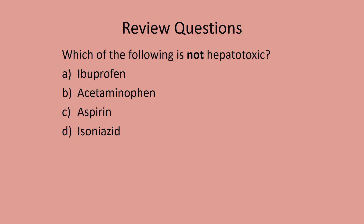Review question: which of the following is not hepatotoxic? Options are ibuprofen (IBU), acetaminophen (APAP), aspirin (ASA), and isoniazid (INH). The answer is ibuprofen — Motrin, vitamin M. Veterans, be careful and check your kidney function. Ibuprofen is nephrotoxic, not hepatotoxic. Everything else — APAP, ASA, and INH — is damaging to the liver.